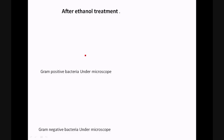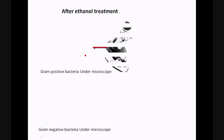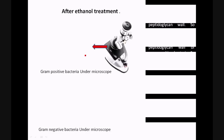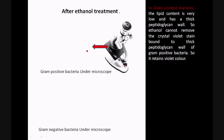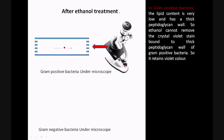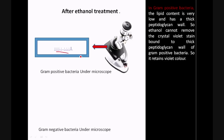Now we will take a close look at what happens after ethanol treatment. In Gram positive bacteria, as mentioned earlier, the lipid content is very low and the cell wall has a thick peptidoglycan layer. So ethanol treatment cannot remove the crystal violet stain that is bound to the thick peptidoglycan wall, and the bacteria retain the stain — we can see these bacteria under the microscope as violet colored.